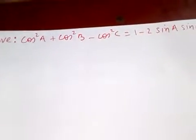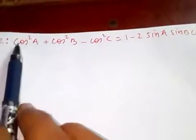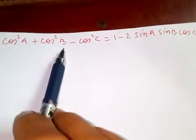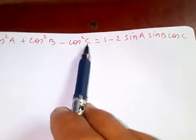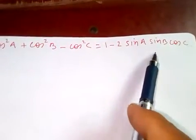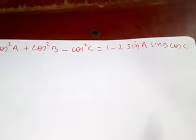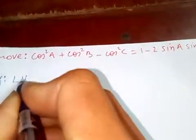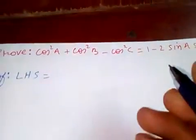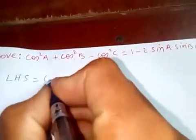Hello friends, today let's prove this: cos²A + cos²B - cos²C = 1 - 2sinAsinBcosC. So let's prove. Let's start from the left-hand side, then is cos